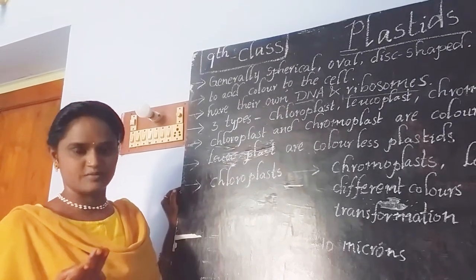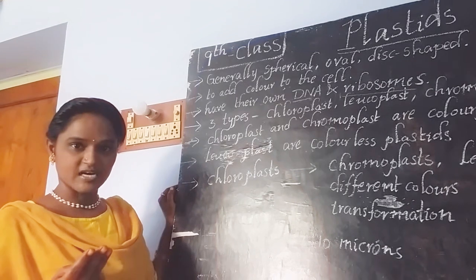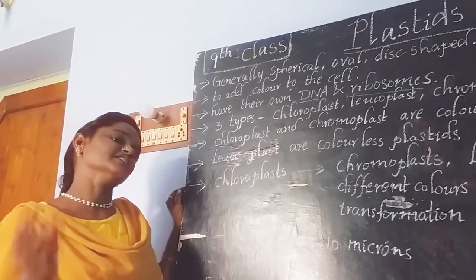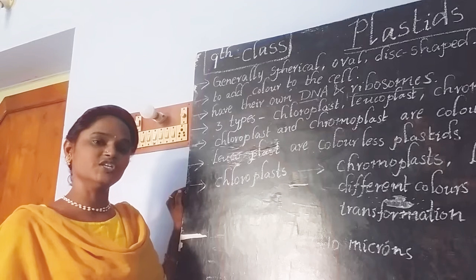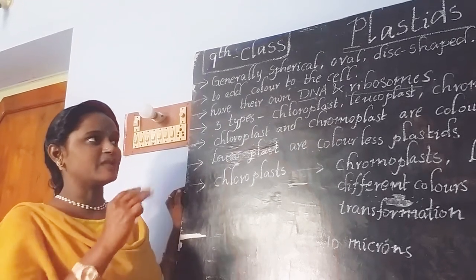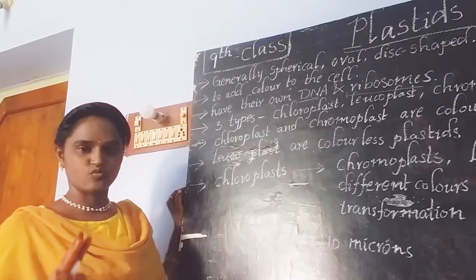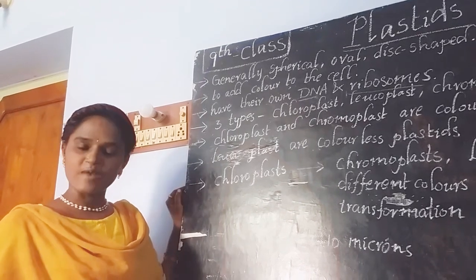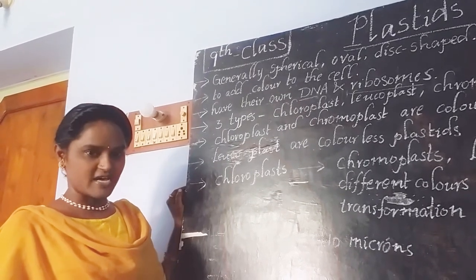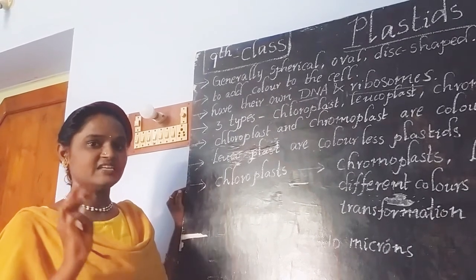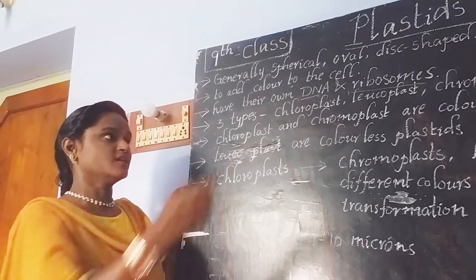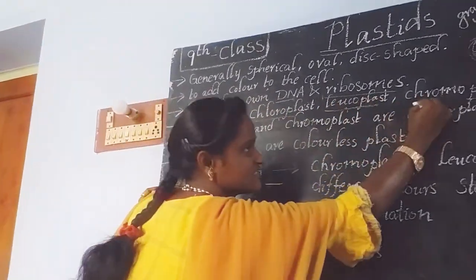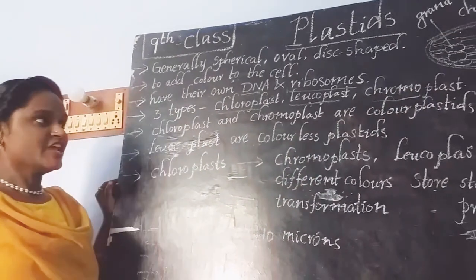Plastids are of three types. Depending on what color they give to the cell and depending on their function, we divide plastids into three types: chloroplast, chromoplast, and leucoplast.